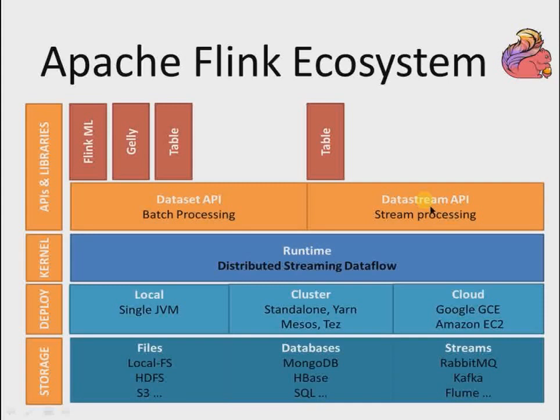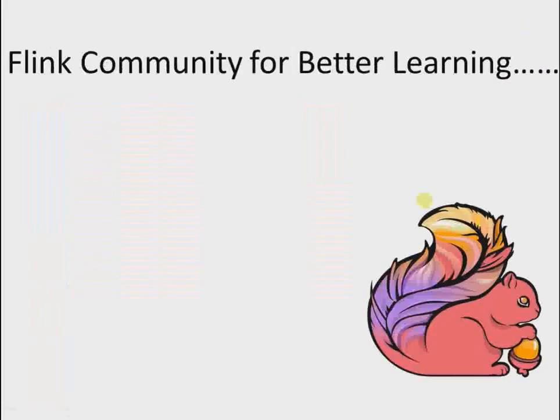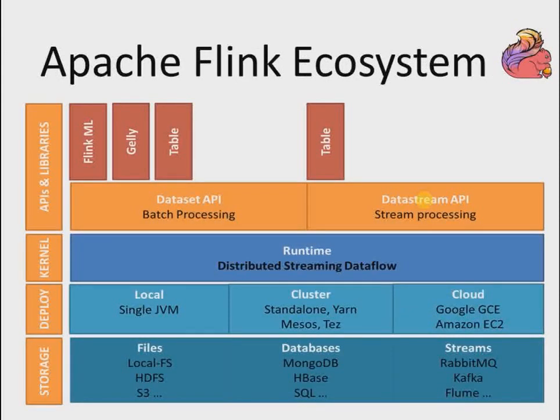The last API is the Table API. It enables users to perform ad hoc analysis through SQL-like language for relational stream and batch processing. It can be embedded into both the DataSet and DataStream APIs in Java and Scala. It allows users to run SQL queries on top of Flink, saving them from writing complex code. Operators such as select, filter, group, and join are all available in the Table API.